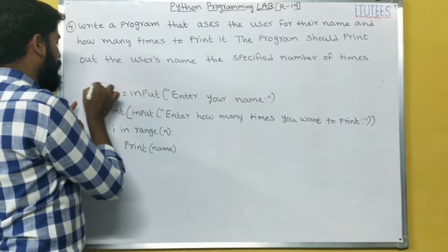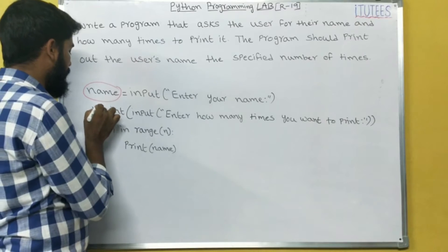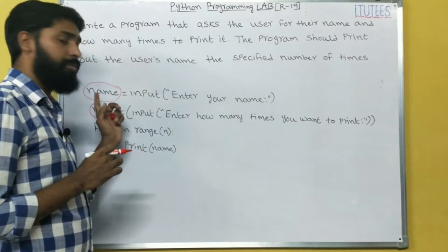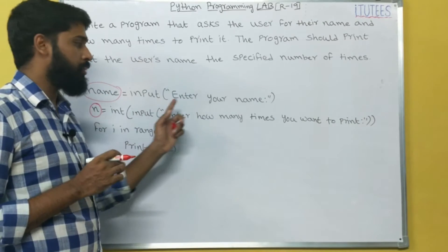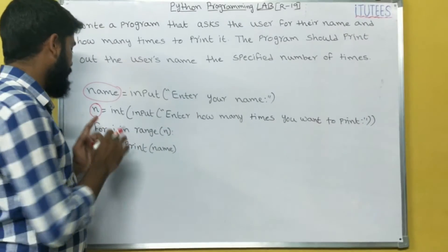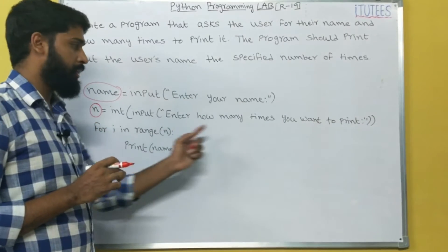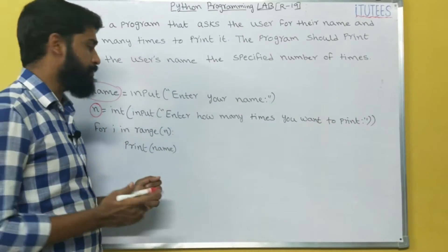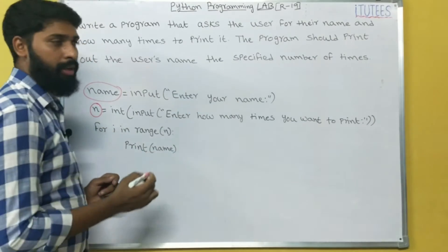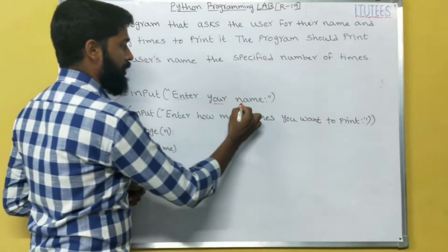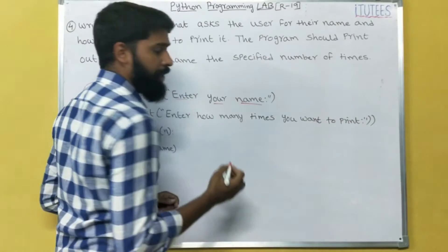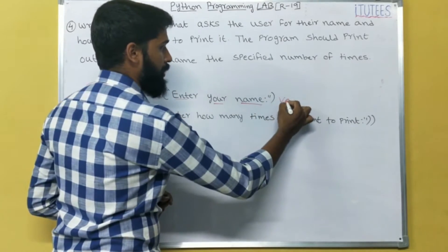So here we are taking two variables, one is name, another one is n. Name variable is used to store your name, and n is used to store the value you are giving from input. Enter your name, it prints this on screen. For example, my name is Varada, I give Varada.